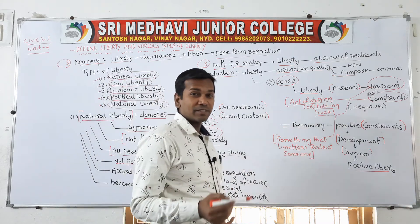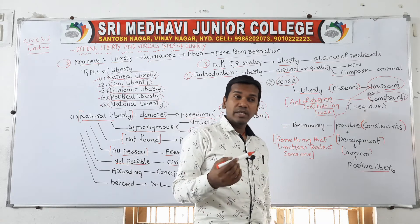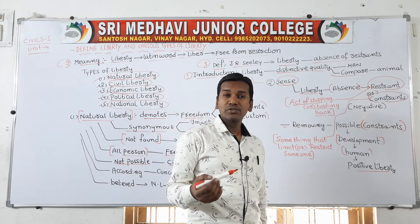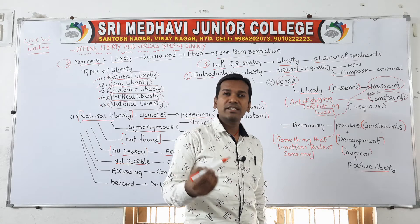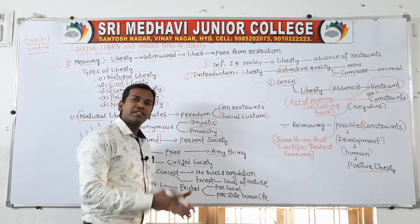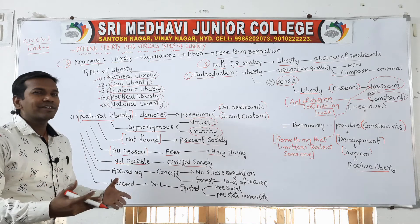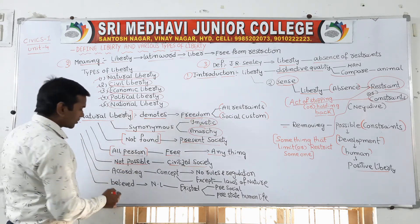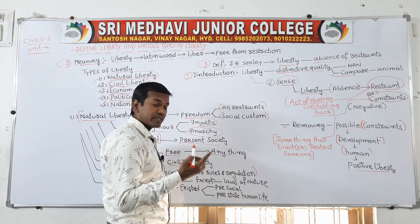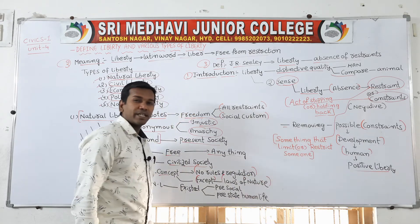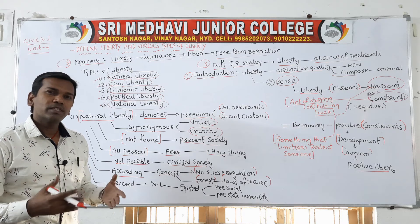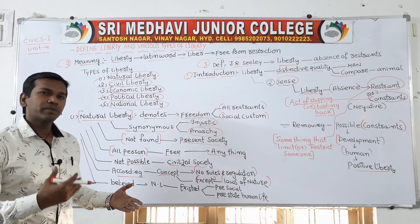At present, societies are civilized and highly educated — able to distinguish what is right and what is wrong. The civilized society leans towards the development of science and technology. In such a civilized society, we cannot find natural liberty. According to this concept, no rules and regulations exist except the laws of nature, which is what prevails in natural liberty.